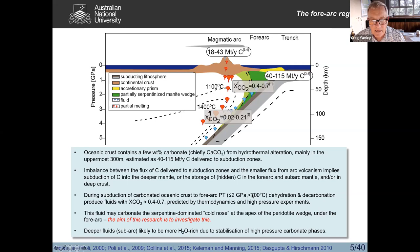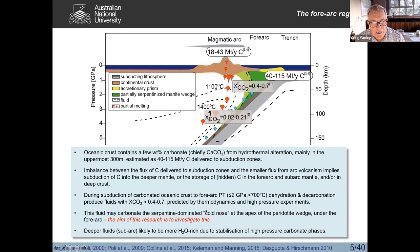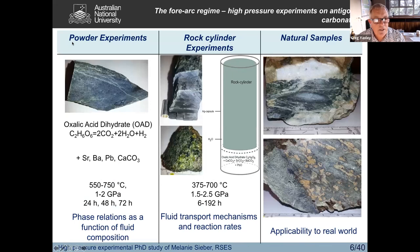Under forearc conditions — less than 2 gigapascals and less than about 700 degrees — this corresponds to the serpentinized cold nose, which is a small wedge more or less isolated from the general convective overturn of the mantle above the subducting slab. We believe that serpentinite or antigorite can actually be carbonated by fluids coming off the subducting slab. These carbonates in the oceanic crust can release CO2-bearing fluids, probably with mole fractions of CO2 roughly 50-50 water. We conducted an experimental study with my student Melanie Sieber to look at the nature of this carbonation of serpentinite in the forearc region.